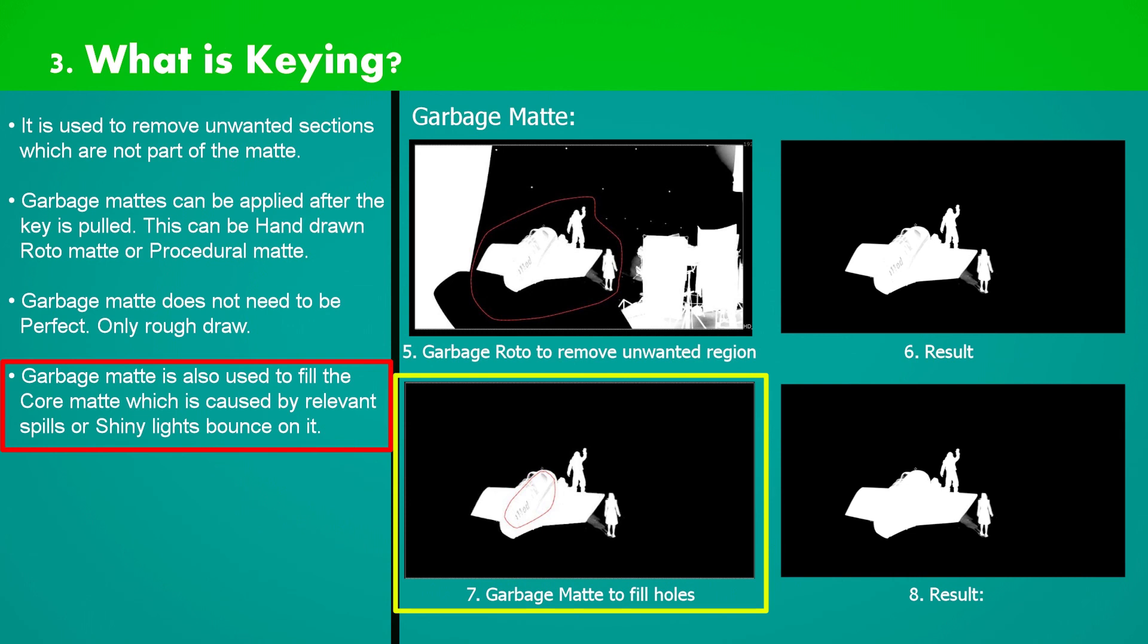That's why on image 7 we have applied garbage matte to fill up the holes, and on image 8 the result. Mat now looking full core plus having unwanted regions all removed. So that's how garbage matte works.